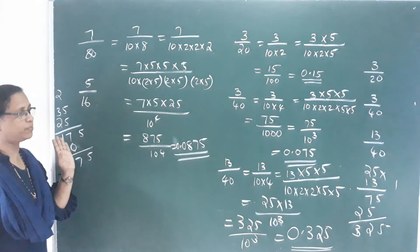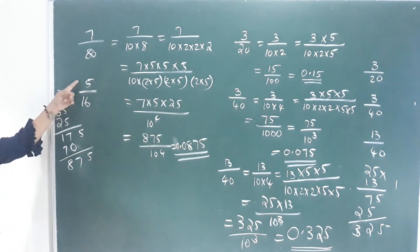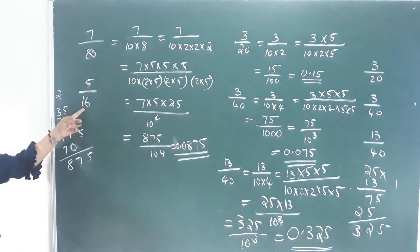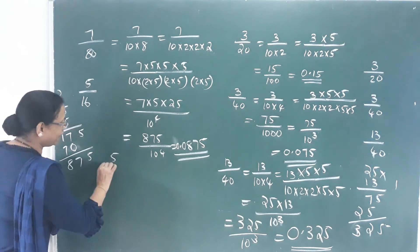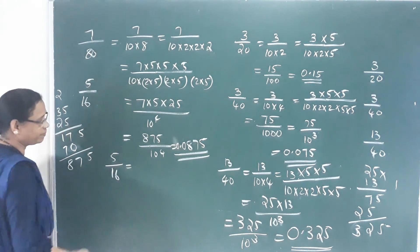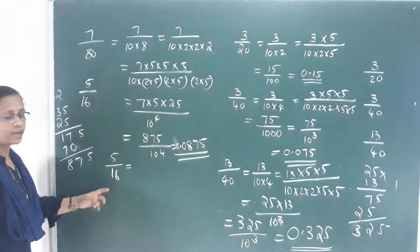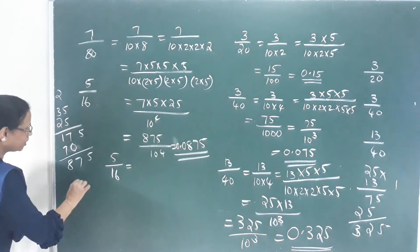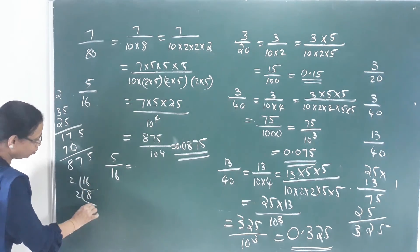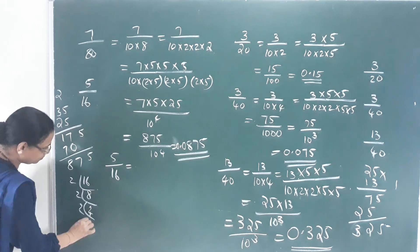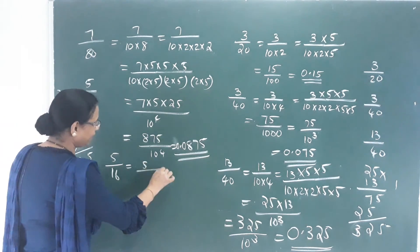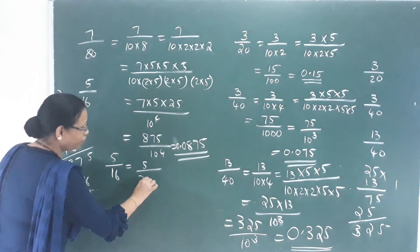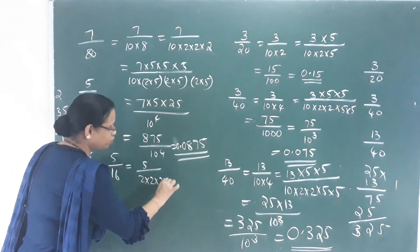875 divided by 10 raise to 4 gives the decimal answer. Now 5 by 16: 16 is 10 into something — we need 10 into 10, and 16 is 2 into 2 into 2 into 2, meaning four 2s.